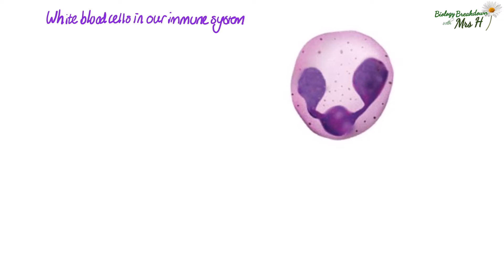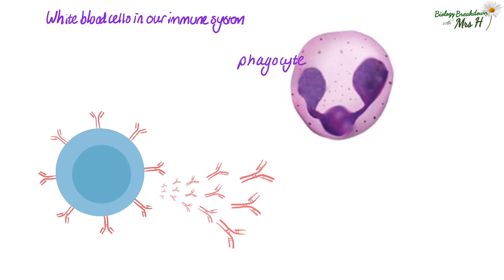Before we talk about monoclonal antibodies we need a quick recap of the different white blood cells in our immune system. At GCSE we learn that white blood cells called phagocytes engulf and destroy infected cells and pathogens, and we also learn about another kind of white blood cell called a lymphocyte. Lymphocytes make antibodies which have a few functions that basically end up with infected cells and pathogens being destroyed. There are different kinds of lymphocytes but the ones that make the antibodies are called B lymphocytes, though at GCSE you can just put lymphocytes.